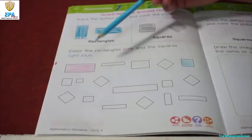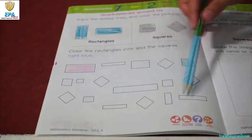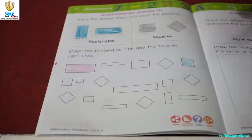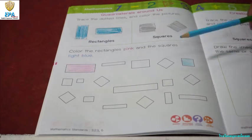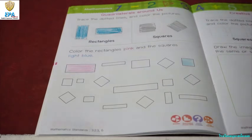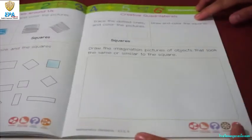Okay, kids. So, you can do the rest. Don't forget to color the rectangles pink and color the squares blue. Let's proceed with the next activity.